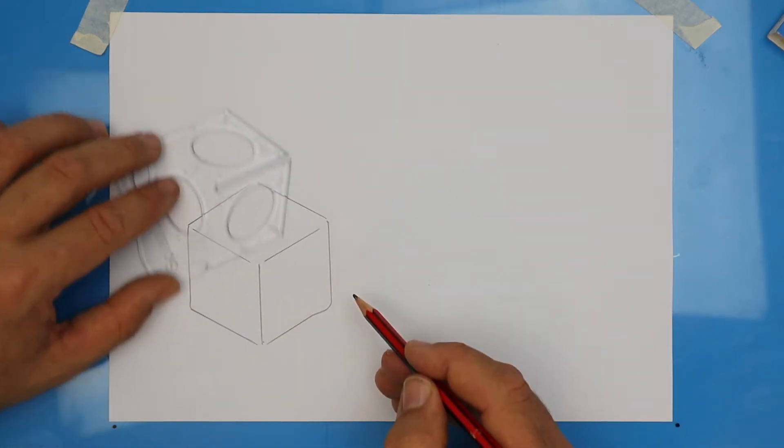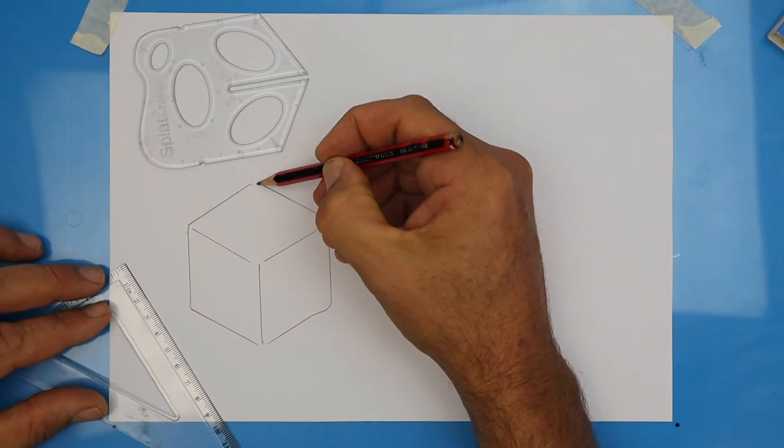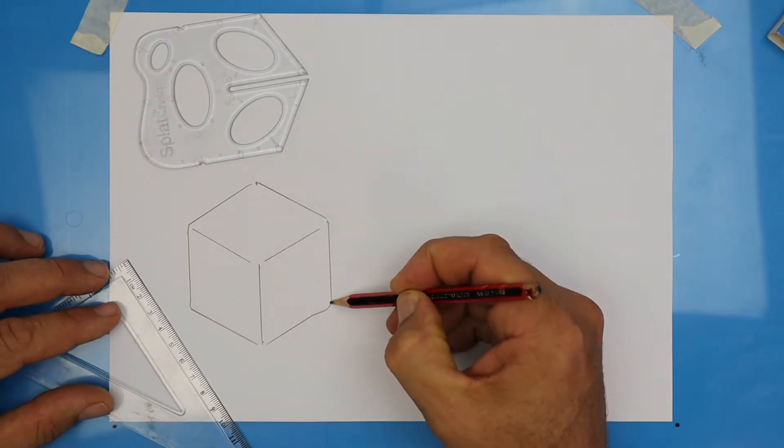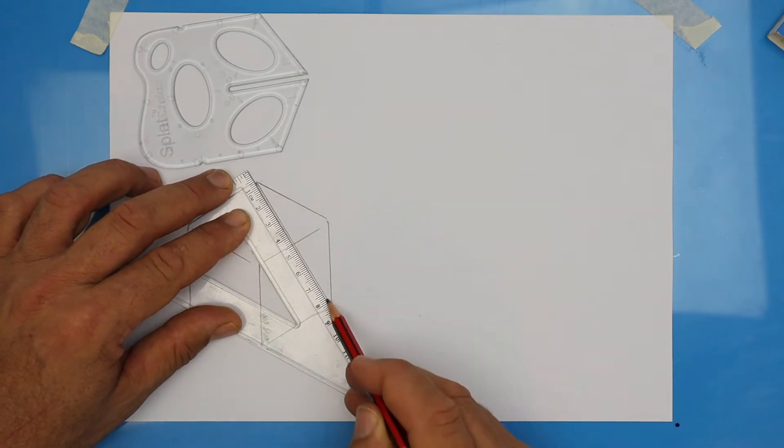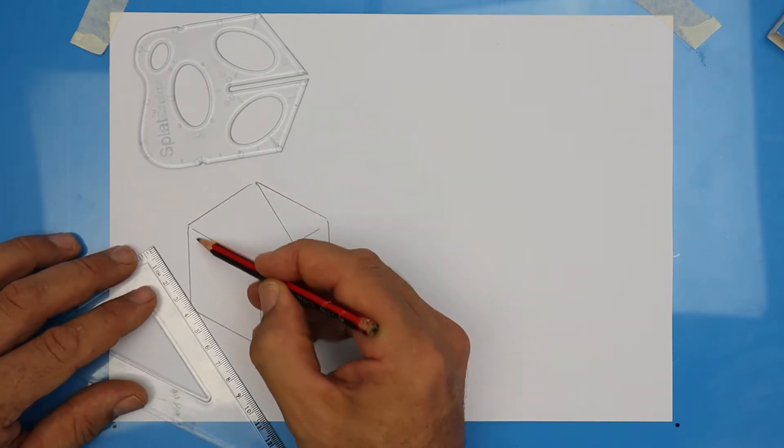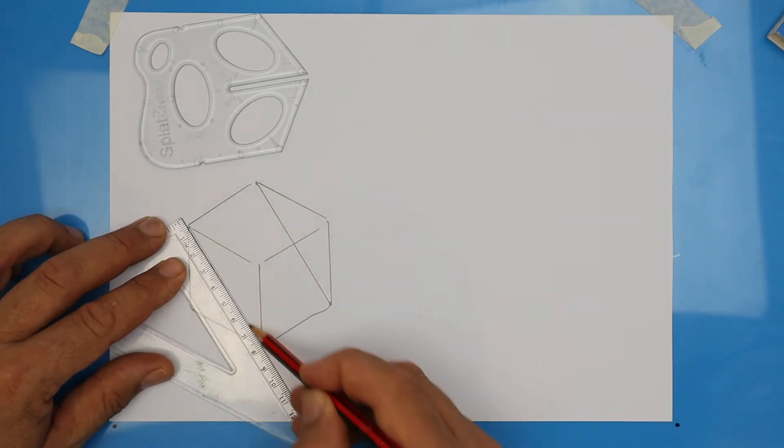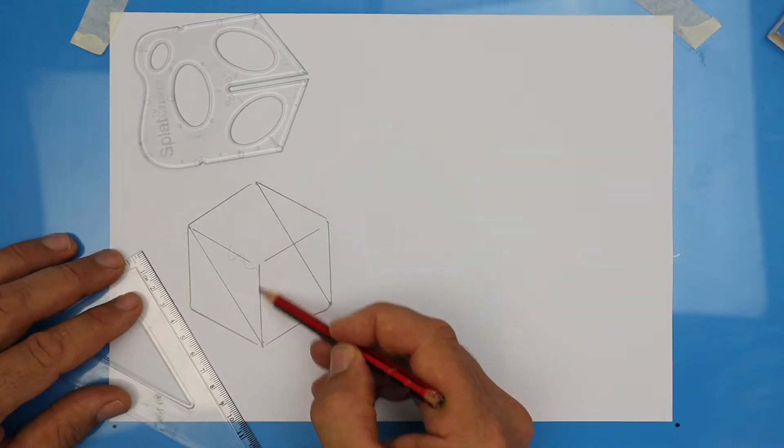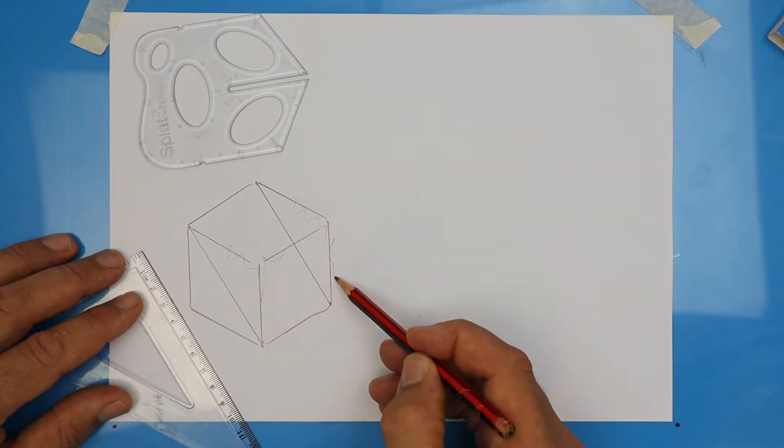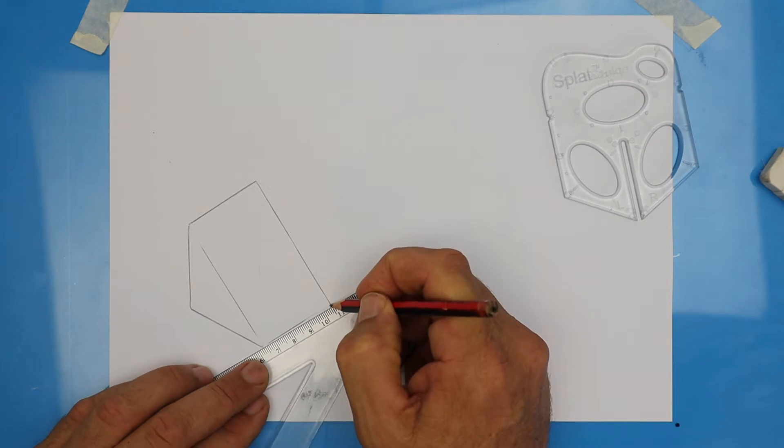Alright, next step is to make this cube into a ramp by drawing some diagonals. Find those two points and simply connect them with a ruler. Same with those two points. I'm going to squiggle out the lines that we're going to erase.